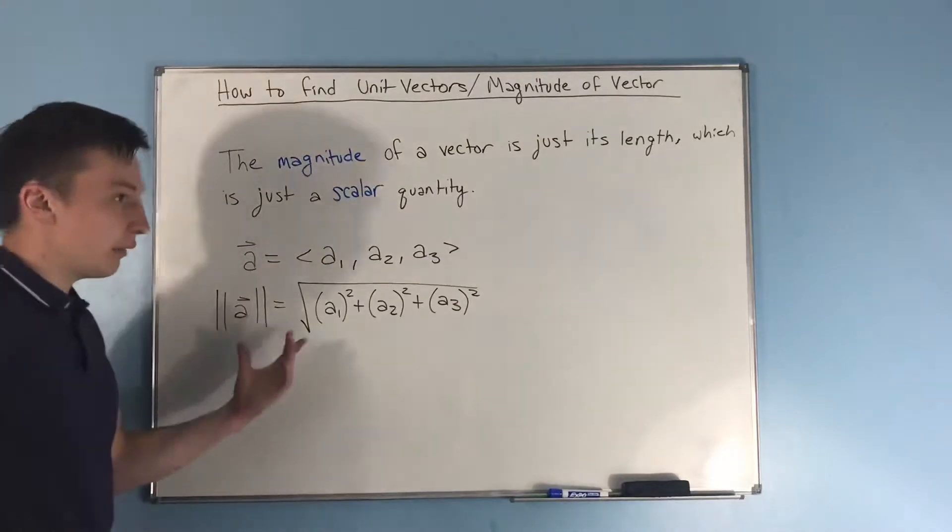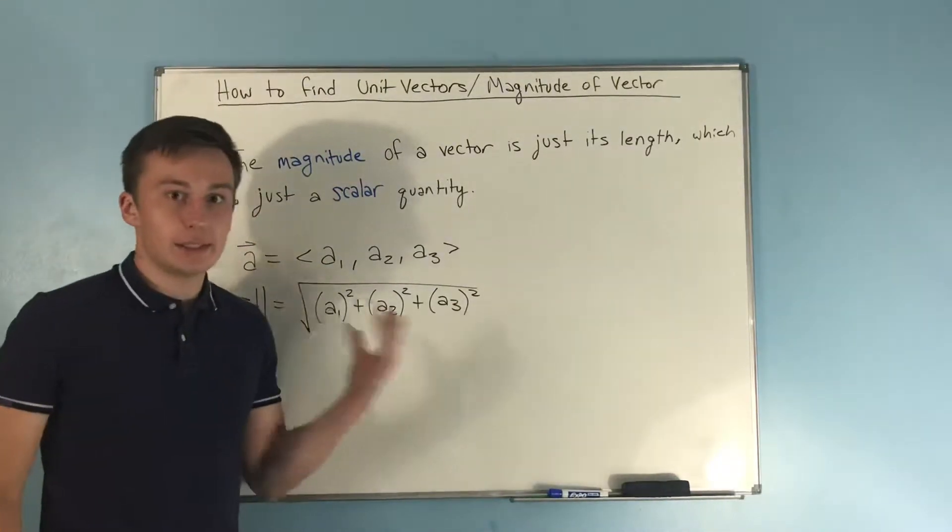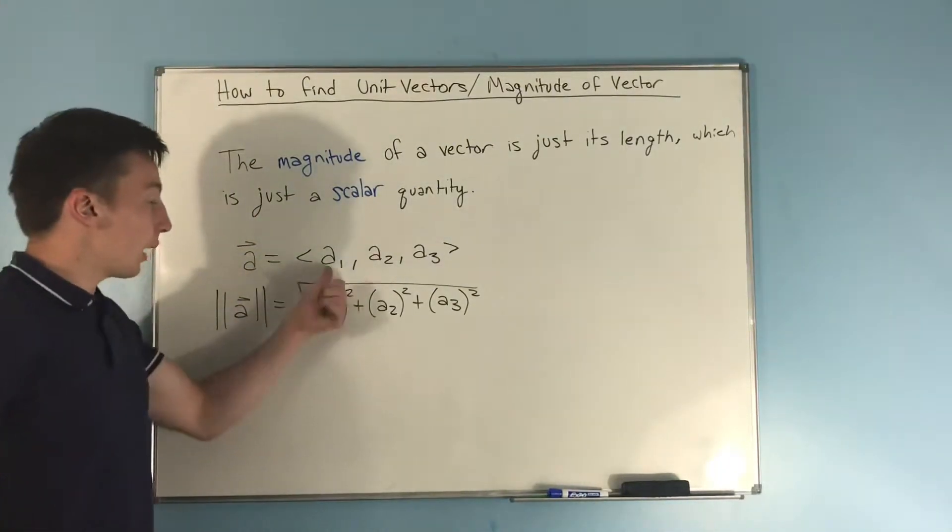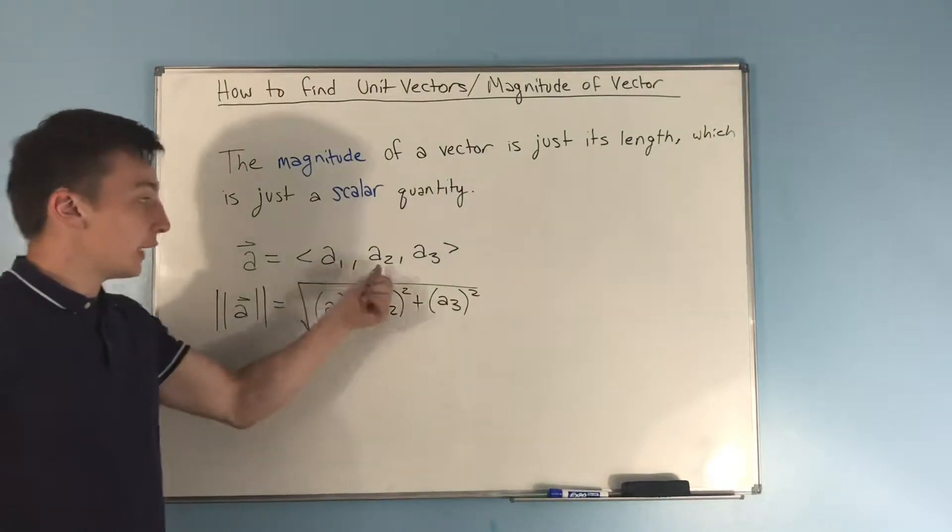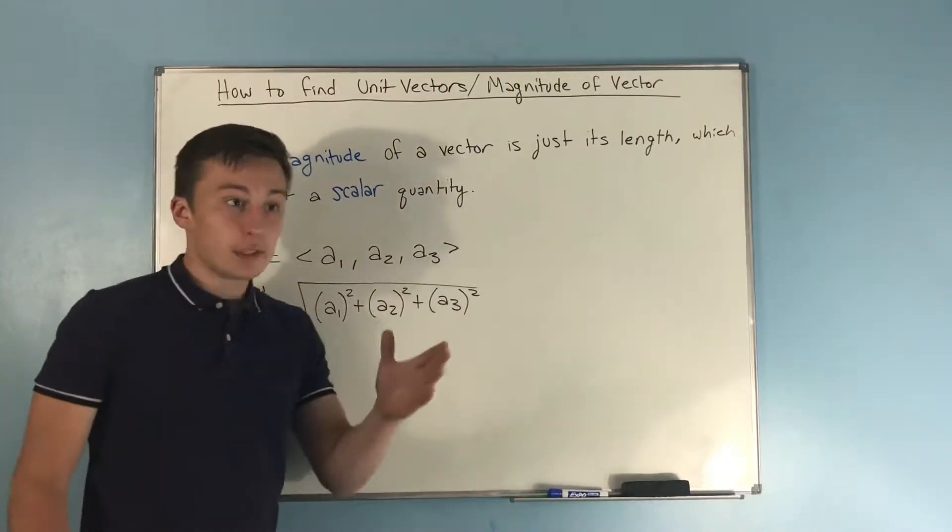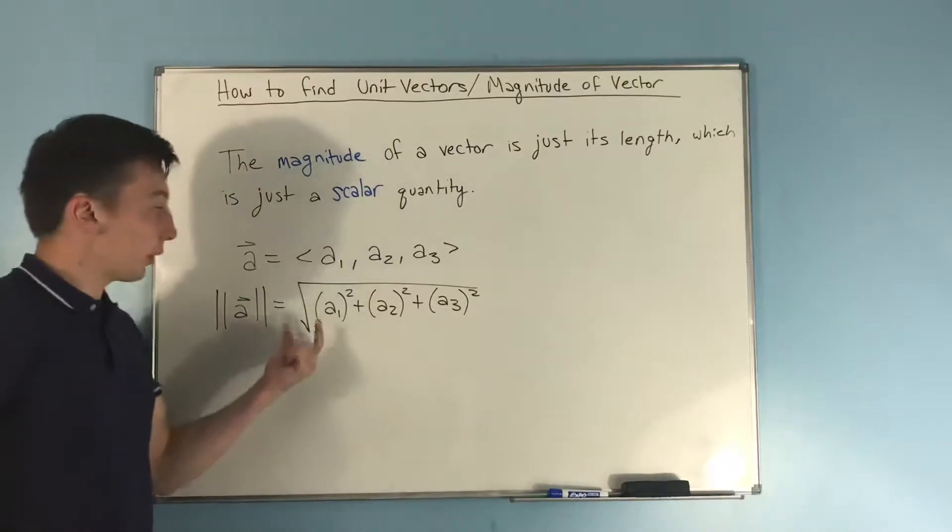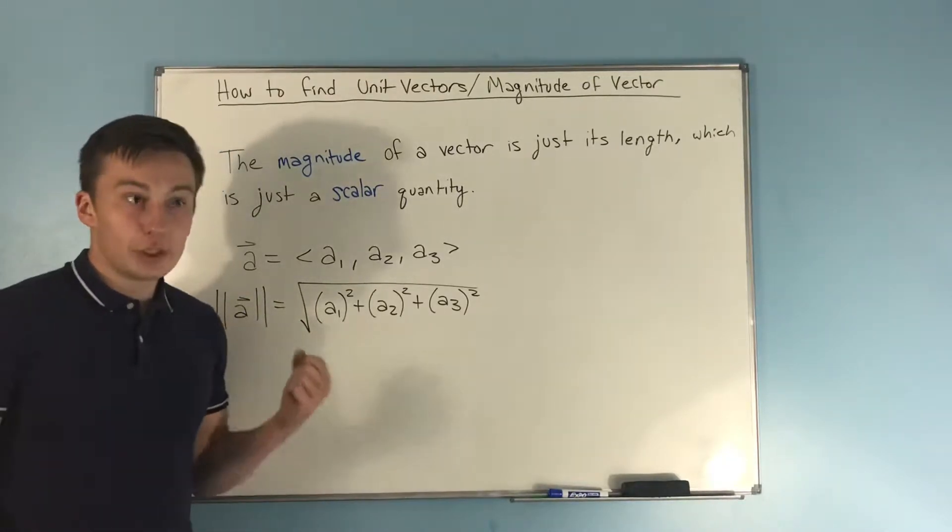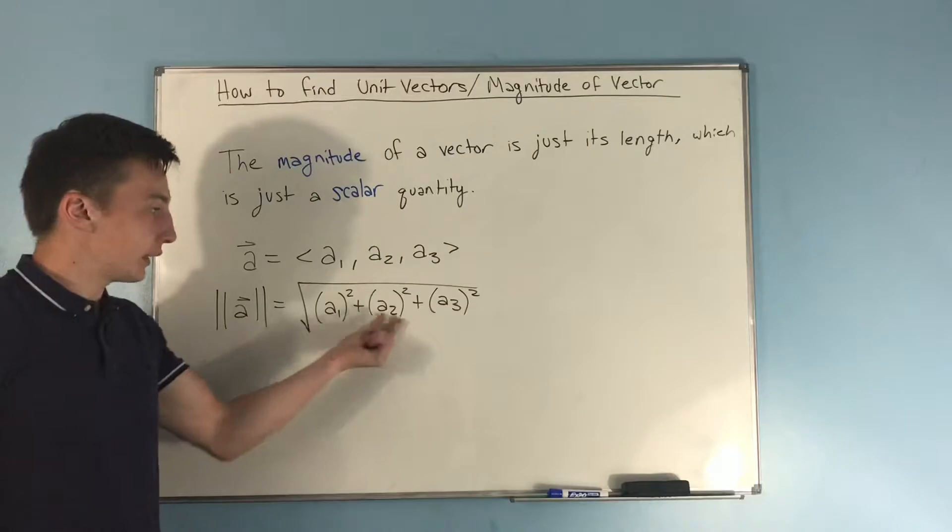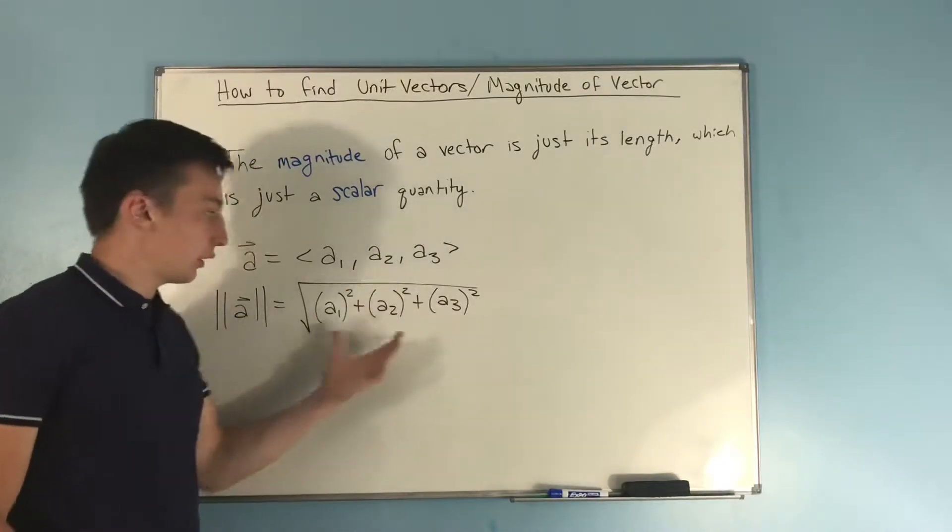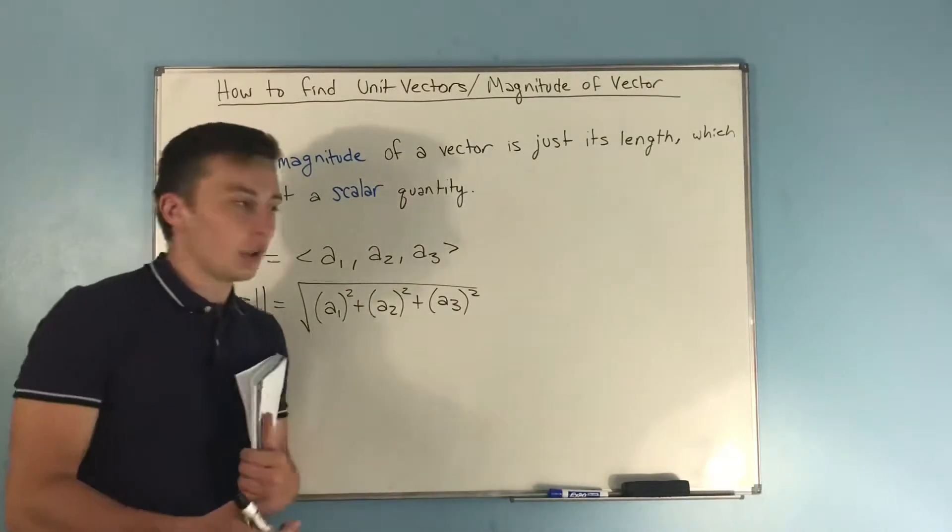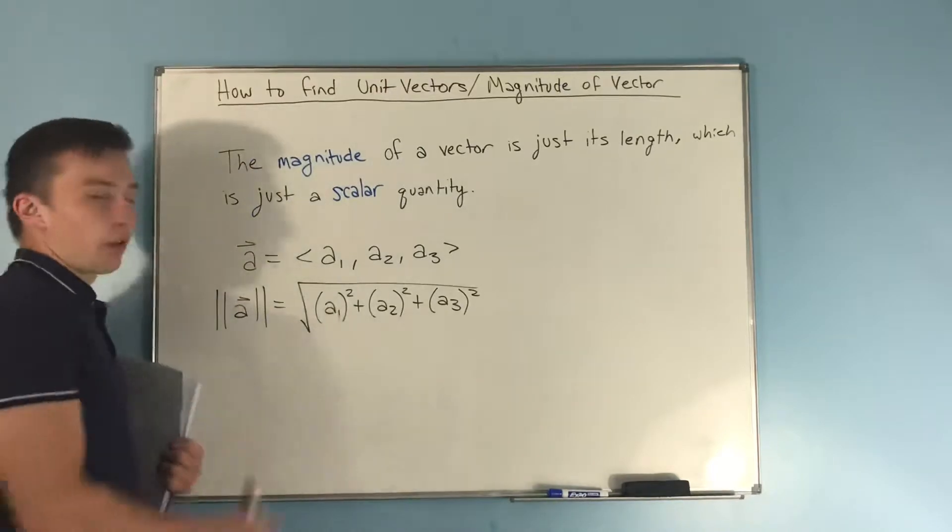It's basically the distance formula, and matter of fact it is the distance formula. Remember how you get this a1, a2, and a3? You're subtracting the initial point from the terminal point, which is exactly what you have to do in the distance formula equation. So this literally is the distance formula.